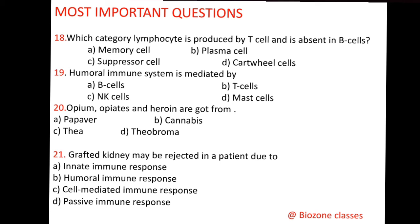Question number 20: Opium, opiates, and heroin are obtained from — A. Papaver, B. Cannabis, C. Thea, D. Theobroma. The correct option is A, Papaver. Papaver and its different parts are the source of opium, opiates, and heroin.